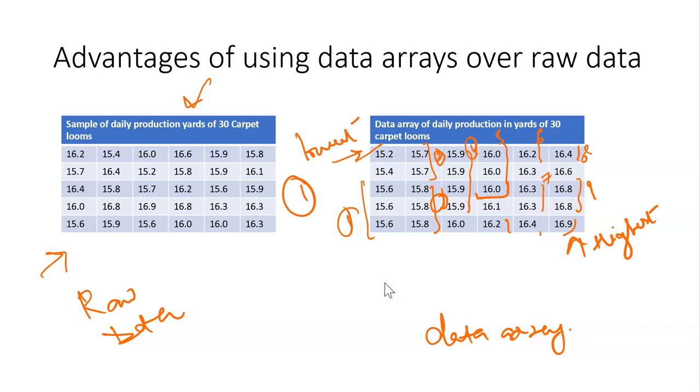So nine times we have seen that a value has occurred more than once. The fourth thing we can do is observe the distance between succeeding values in the data. For example, what is the difference between 16.6 and 16.8? The distance is 0.2 yards. It's the same distance: 15.2 to 15.4 is 0.2 yards. These are the four things we can talk about the data once we arrange it. That is the advantage of using data arrays over raw data.